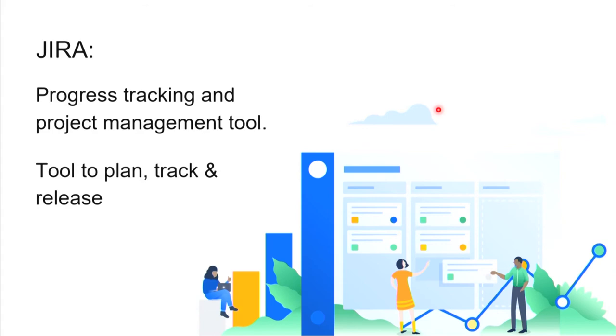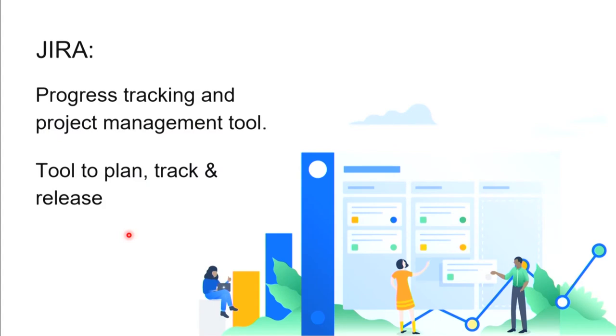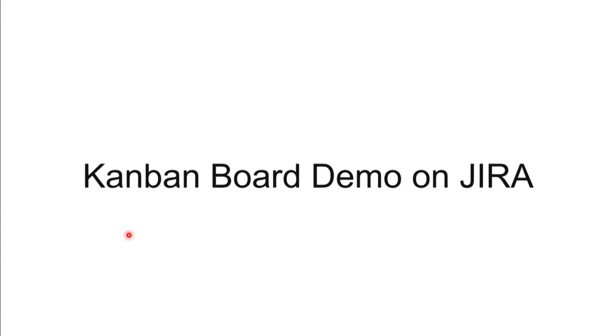In Jira, you can track specific tasks that you are doing — that's the project management part. Coming back to Kanban, where we were creating lists of work items — in order to create a digital board, we use Jira. There are other freely available tools such as Trello you can explore, but here we use Jira. Developed by a company named Atlassian, Jira is a progress tracking and project management tool that helps you plan, track, and release your software.